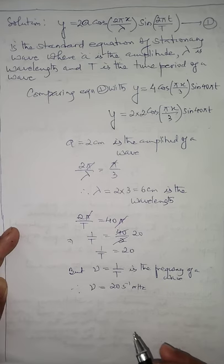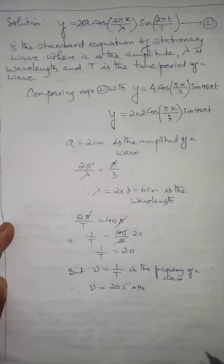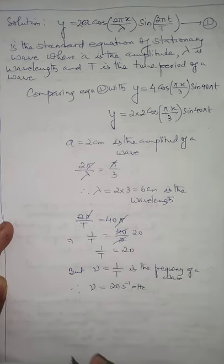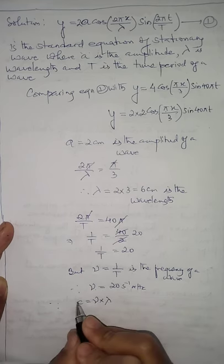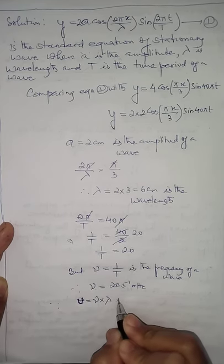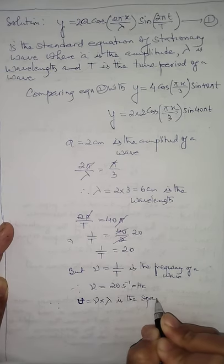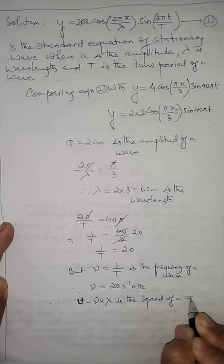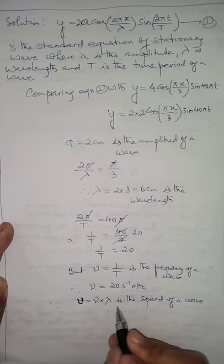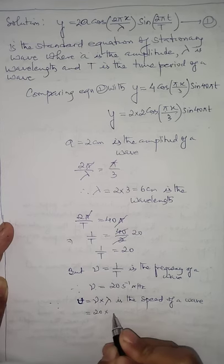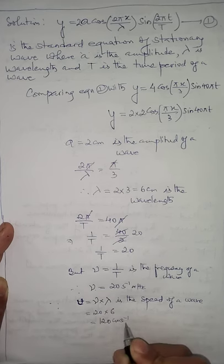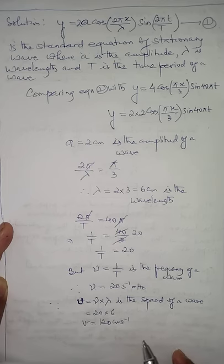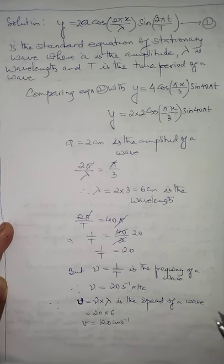Since we know frequency and wavelength, we can calculate the speed of the wave. Speed v = frequency × wavelength = 20 × 6 = 120 centimeters per second. So the speed of the progressive wave is 120 cm/s.